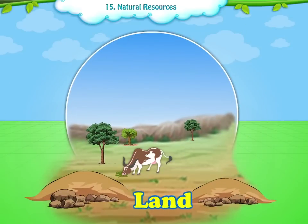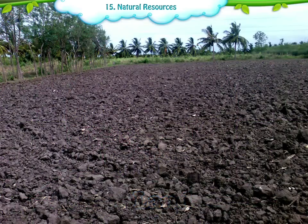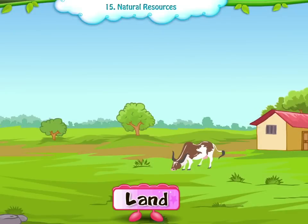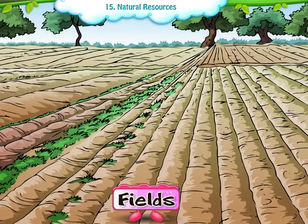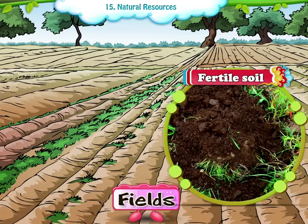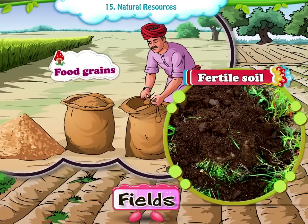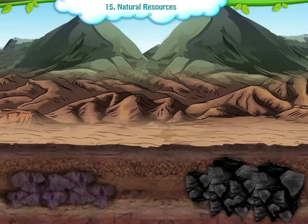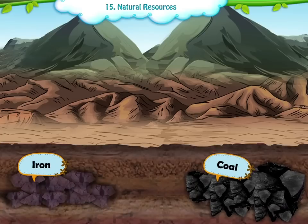Land. We observe the soil, mountains, land and fields in our surroundings. The fields have fertile soil. From this soil, we get food grains. If we dig the ground, we get minerals like iron and coal.